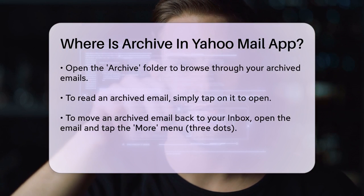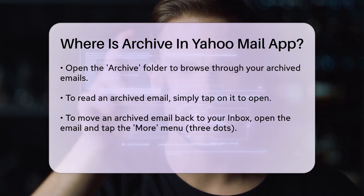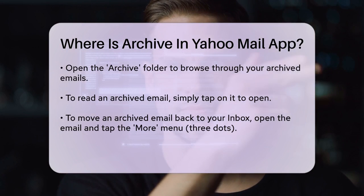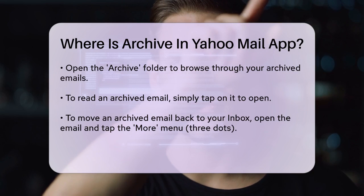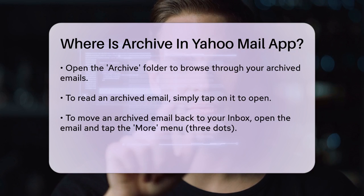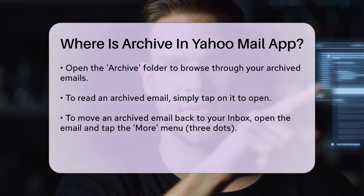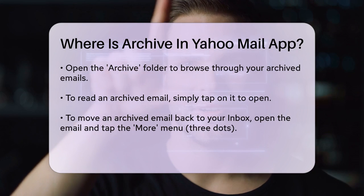To move an archived email back to your inbox, open the email, tap the More menu — usually represented by three dots — and select Move or Restore to Inbox. This will move the email back to your main Inbox folder.